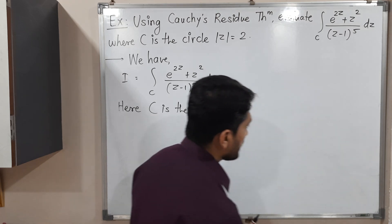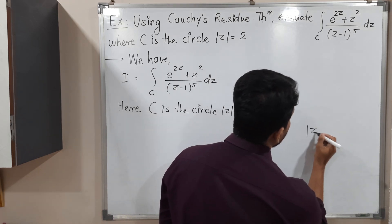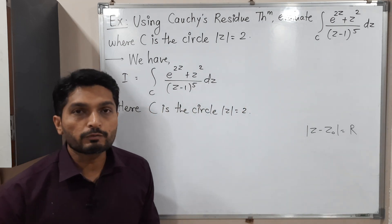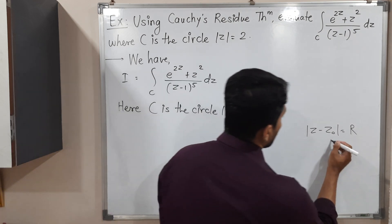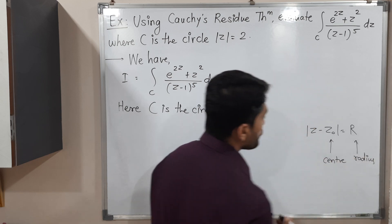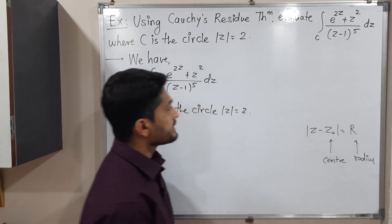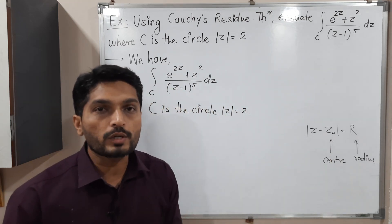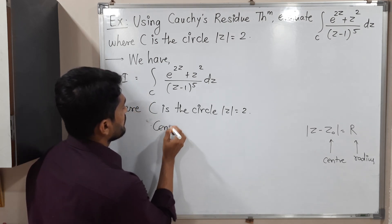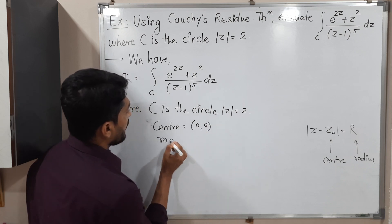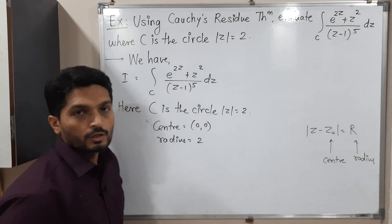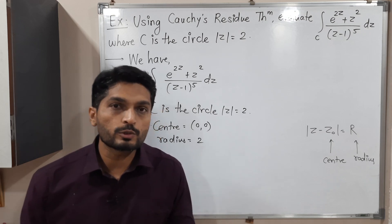The standard equation of a circle is |Z − Z₀| = R. I will compare the given equation with the standard equation and find the center and radius of this circle. In the standard form, Z₀ is the center and R is the radius. In the given equation we have simply |Z|, which means Z₀ is 0. So center is (0, 0) and comparing the right-hand side, R = 2. So the radius is 2.